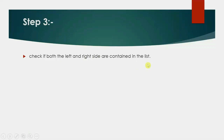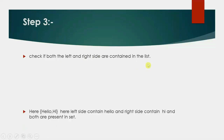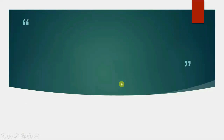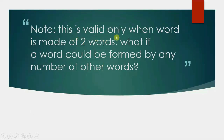Step 3: check if both the left and right side are contained in the list. Here, left side contains 'hello' and right side contains 'hi', and both are present in the set. Hence the longest word in the set is 'hello hi'. Note: this is valid only when the word is made of exactly two words.